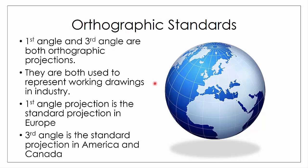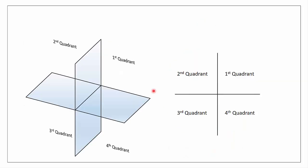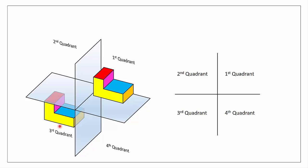Let's look at where first and third angle come from conceptually. If you imagine a vertical plane — like a sheet of glass — and a horizontal plane, where the two planes cross gives us an X shape, dividing space into four quadrants. The first quadrant is where we get first angle projection, and the third quadrant is where we get third angle projection. We place an object either in the first or the third quadrant — we don't concern ourselves with the second or fourth.